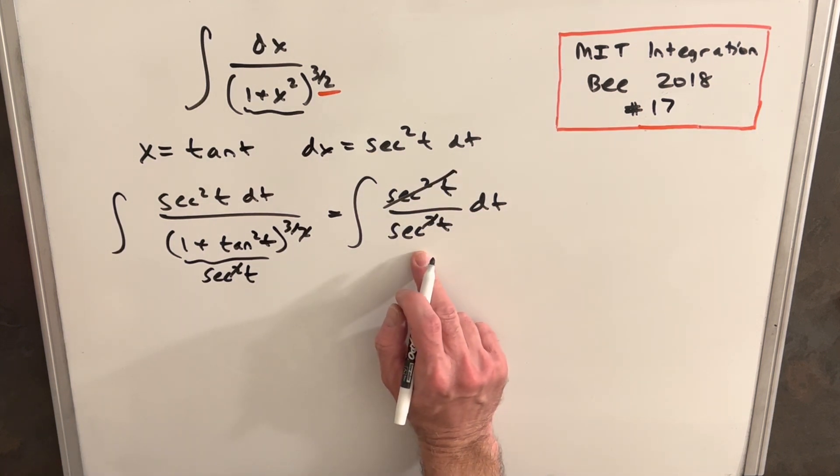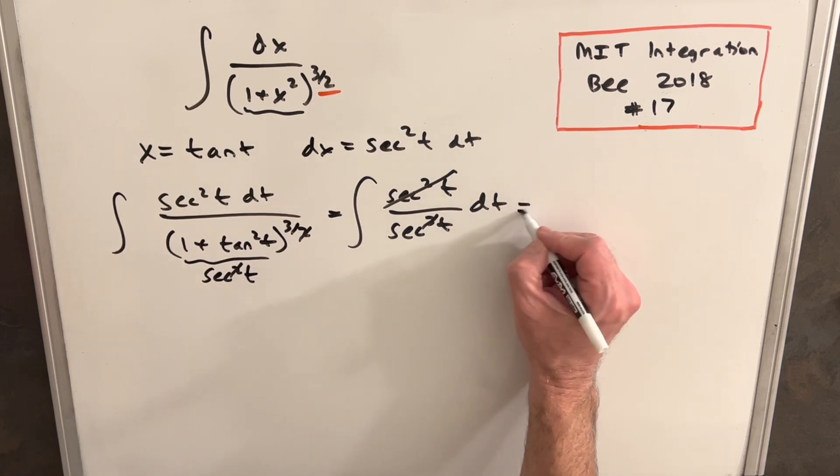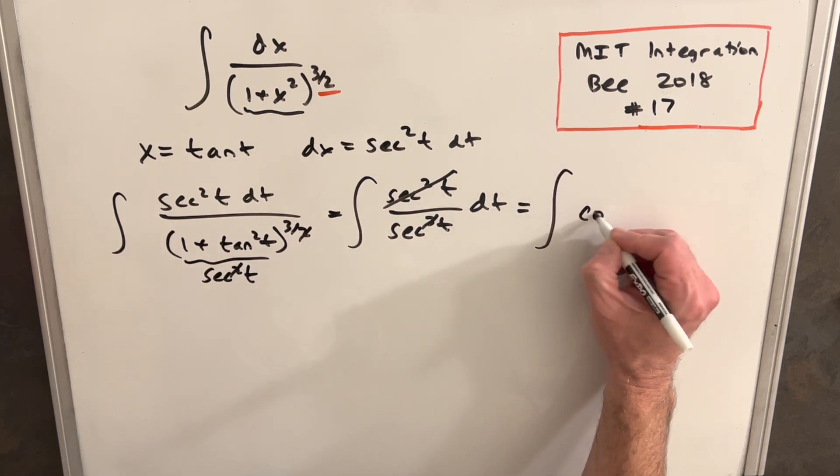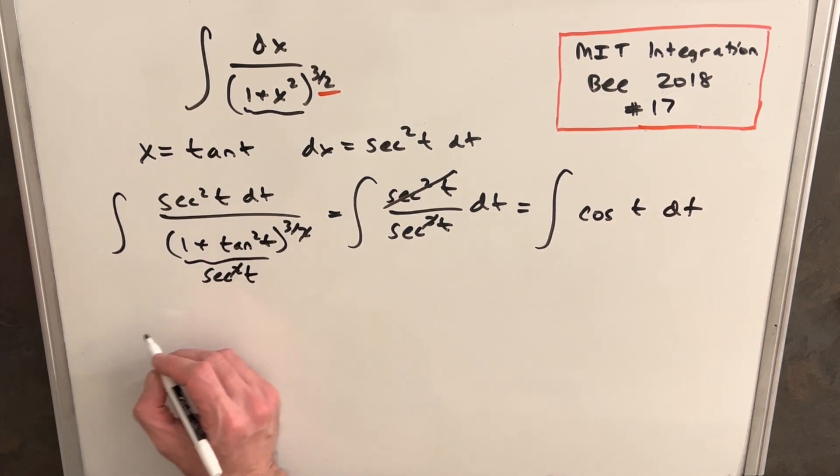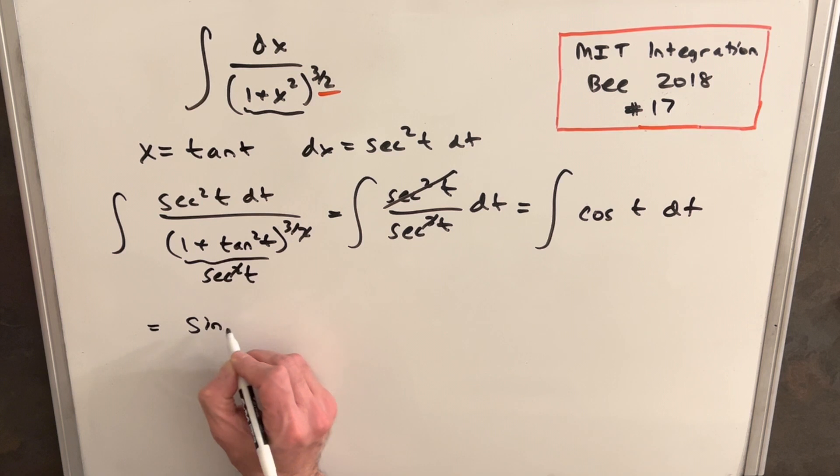That's going to cancel with that. We're going to have one over secant t. But secant t is one over cosine t. So this actually turns out to be just cosine of t, which is real nice, because we know the integral of that is just sine of t.